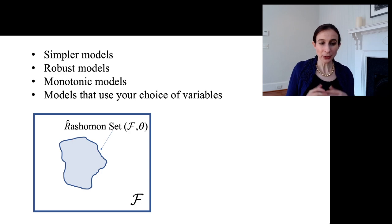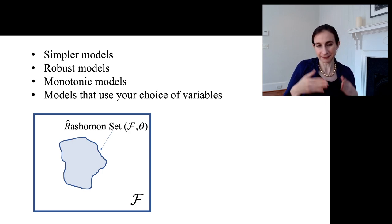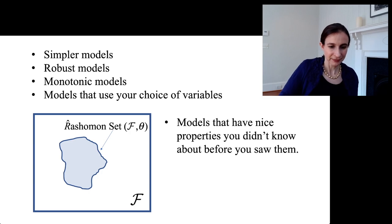Also, you could impose your choice of variables on the model. And you may be able to do this again without losing accuracy, because as long as that set of variables is capable of producing a model that's in the Rashomon set, you're good. Also, you could find models that have nice properties that you didn't know about before you saw them. You might be able to find a simple model and say, hey, I like a particular property that this model exhibits, and now I can build that in as an extra set of constraints. And I can constrain my new algorithm and hopefully produce a model that's still good, that's still in the Rashomon set.